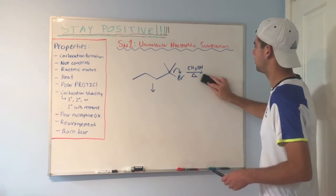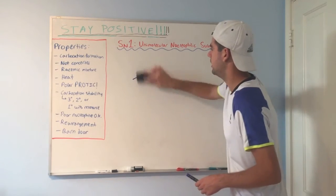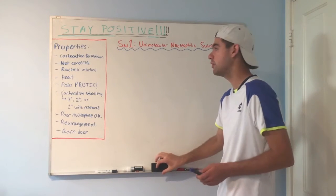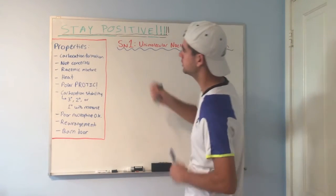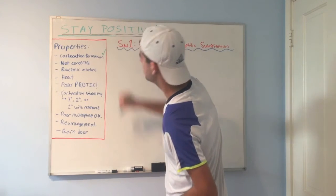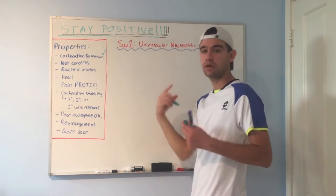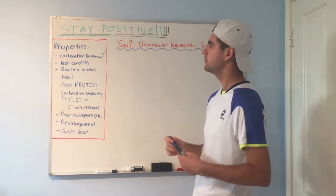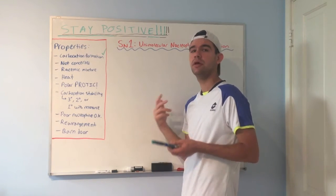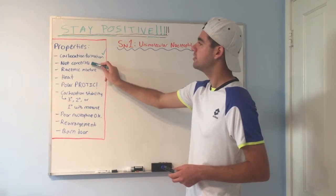Now I want to go over some important characteristics of SN1 and how those differ from SN2 and other reactions. So we already talked about this, carbocation formation. We can put a check next to that. Basically, a very unstable carbocation is formed in every SN1 reaction, and it immediately reacts with a nucleophile. Not concerted.